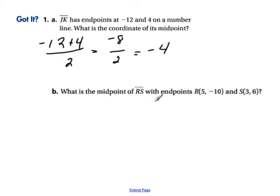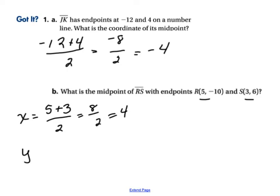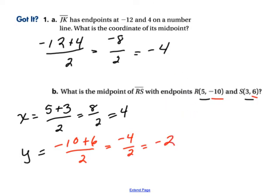For part B, what is the midpoint of segment RS given its endpoints? For the x-coordinate, we take 5 plus 3 divided by 2, which gives 8 over 2, or 4. For the y-coordinate, we use negative 10 and positive 6: negative 10 plus 6 divided by 2 gives negative 4 divided by 2, which is negative 2. Writing the coordinates as an ordered pair — x-coordinate first, y-coordinate second — the midpoint is (4, negative 2).